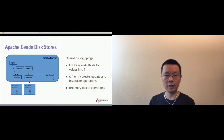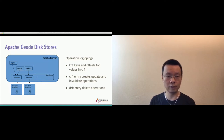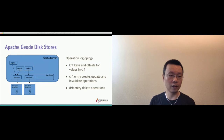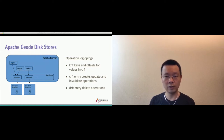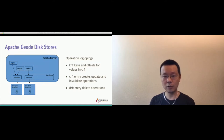The cache server is a Java process. Outside the Java process, the disk store presents the region data into the operating system file system. On the file system, you can see two sets of files for the disk stores — we call them op-log files, which stands for operation log. There are files with extensions .krf, .crf, and .drf. The krf files store the keys and offsets for values in the crf files. The crf files store entry create, update, and invalidate operations. The drf file stores entry delete operations.